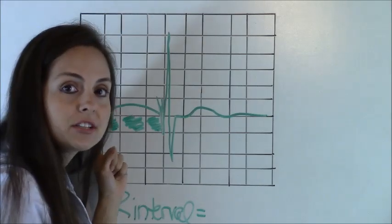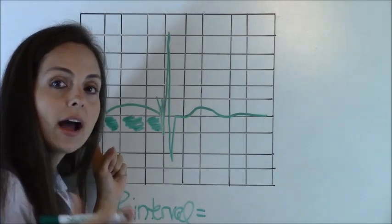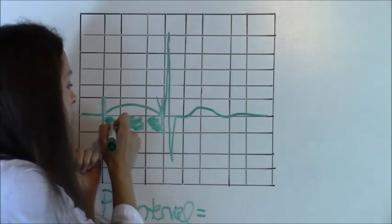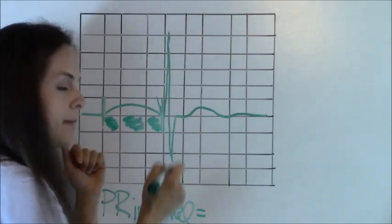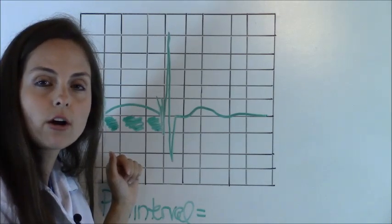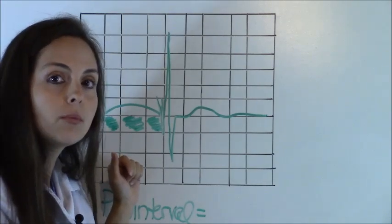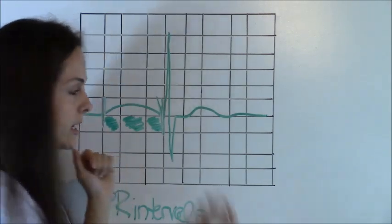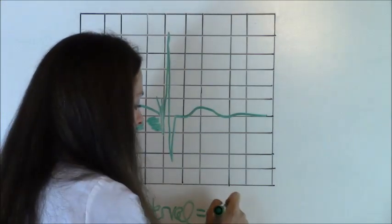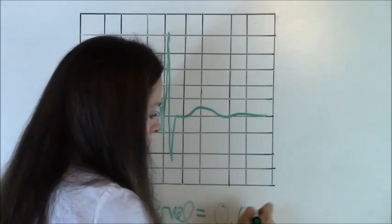Now, all we have to do is count. And we're going to count how many boxes are in between those two measurement points. And we have one, two, three. Remember each box represents 0.04 seconds. So 0.04 times three, because there's three boxes, equals a PR interval of 0.12 seconds.